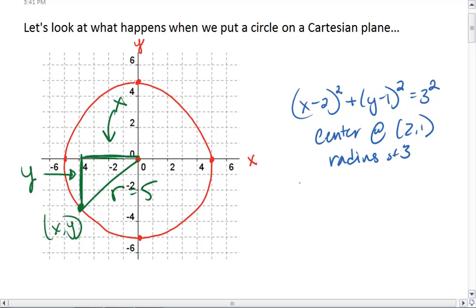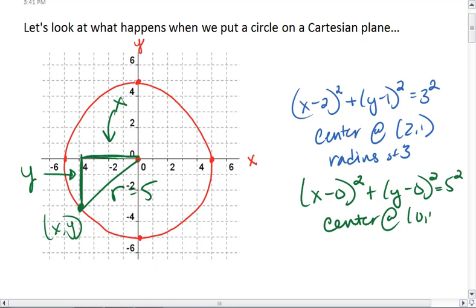So this circle has the equation of x minus 0 squared plus y minus 0 squared equals 5 squared. And this circle has a center at 0, 0, and a radius of 5.